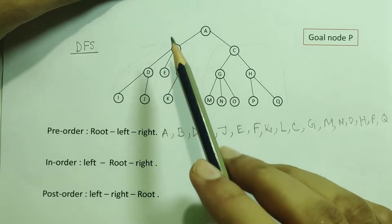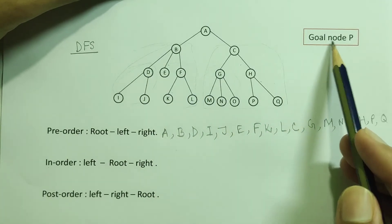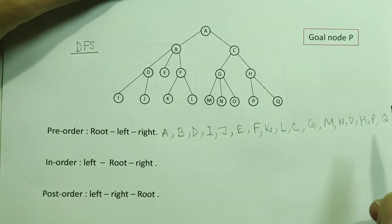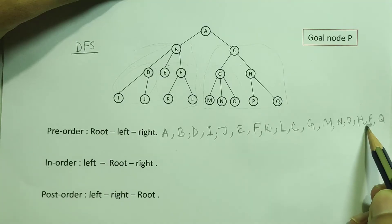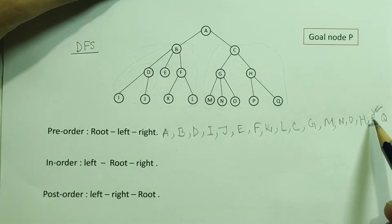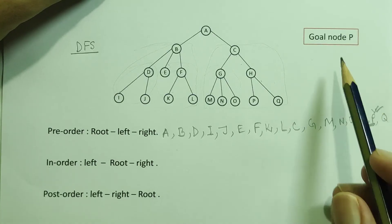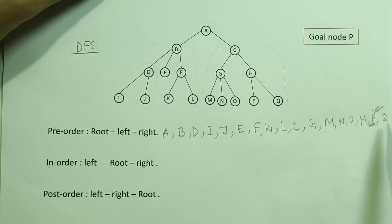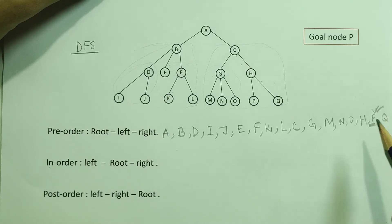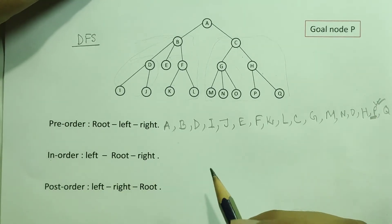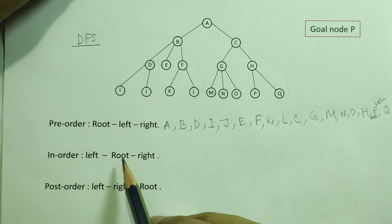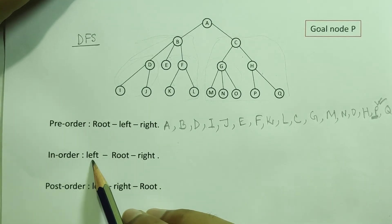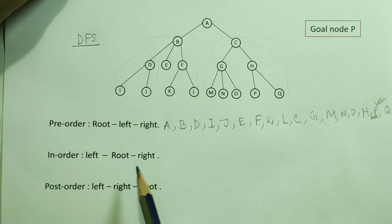We're going to say P, P, P. We're going to say P is G. It is not easy to do the same thing, but we are going to solve this problem. In order, we will complete the solve problem. In order, we know that root comes first and the last method is right. The second method is to enter the root, then we go to the left.